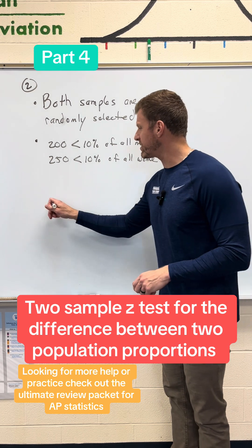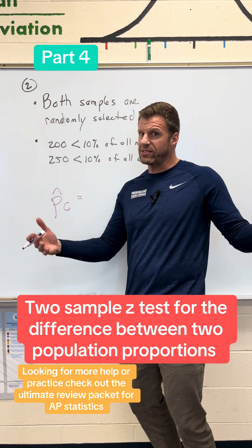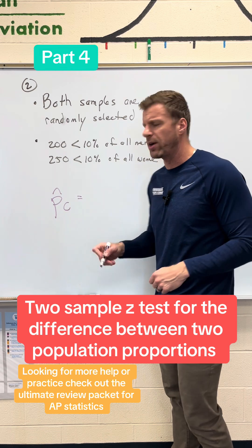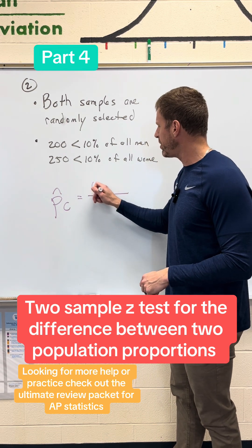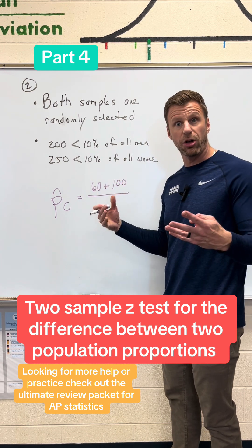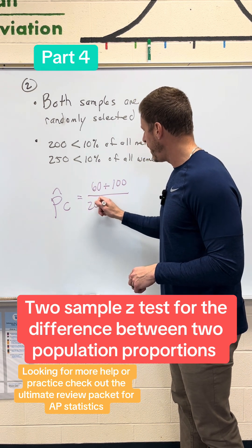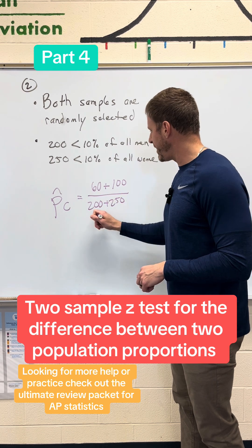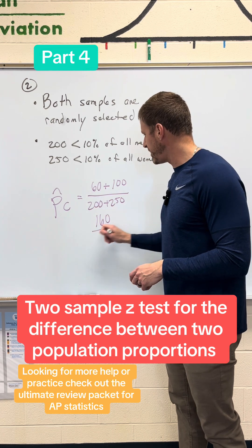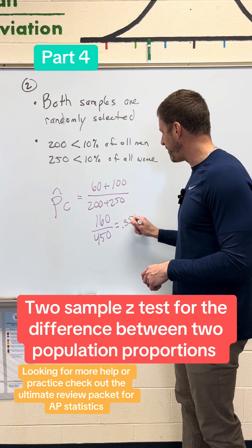A lot of students forget this: we say, let's combine both of our samples together. If the null is that they're the same, why treat them differently? If they're the same, what does it matter if you're a man or a woman? So we put all 60 plus 100 people together — those are the men and women with a college degree. Then we put the 200 and 250 together, giving us a P-hat combined of 160 divided by 450, which is approximately 0.356.